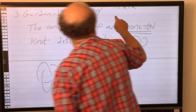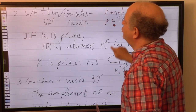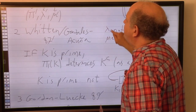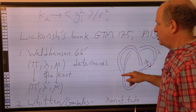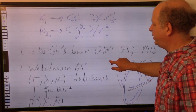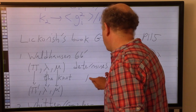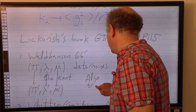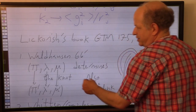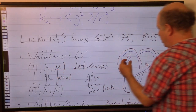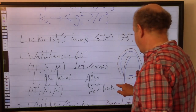One more thing: the Waldhausen theorem is also true for links, where instead of a single longitude and single meridian you have n longitudes and n meridians, where n is the number of components. I failed to find an authoritative reference in the hour or so I was searching, but I know it's true.